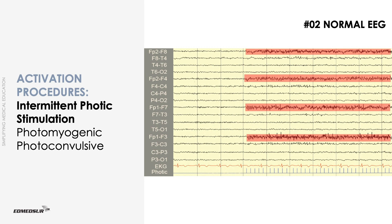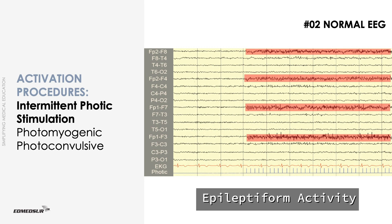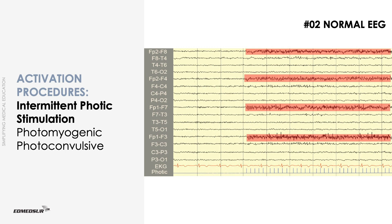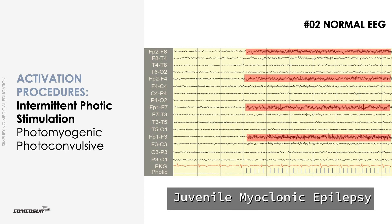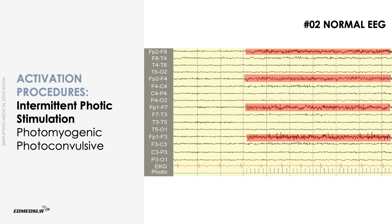Photoconvulsive response consists of spikes and other epileptiform activity. They usually show no clear relationship to the stimulus frequency. JME is the most common form of primary generalized epilepsy associated with photoconvulsive response.